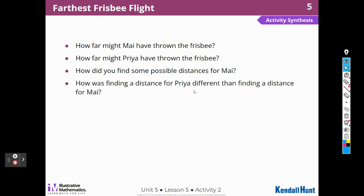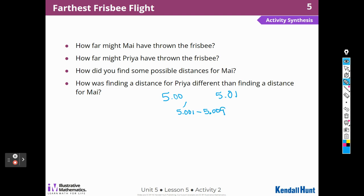How was finding the distance for Priya different than finding the distances for Mai? That one was a little bit harder. Remember, Priya's distance had to be greater than five but less than five and one hundredth. So I had to realize that the numbers between five and five and one hundredth would be five and one thousandth all the way to five and nine thousandths. I had to pick a number bigger than five, but since Priya had just one hundredth, I could not find a number using hundredths — so I had to go to thousandths, because they're smaller than hundredths.